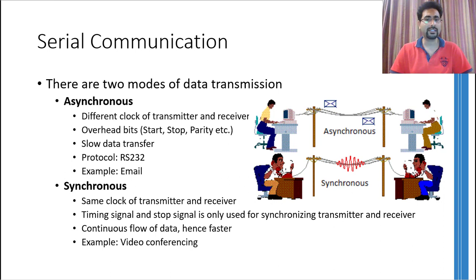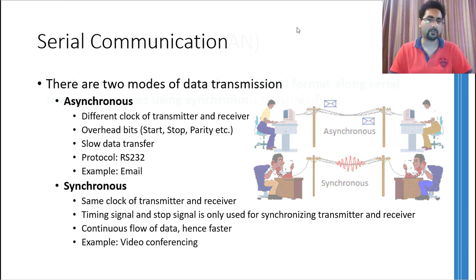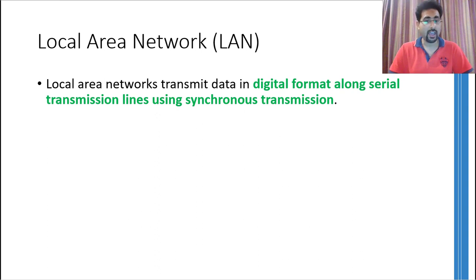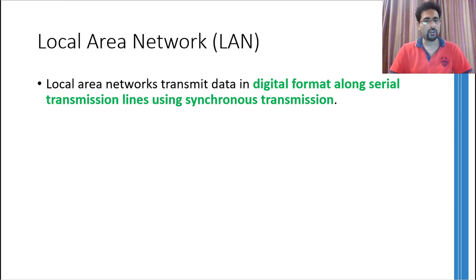An example of synchronous communication is live video conferencing, where whatever your friend says, you will listen to it as soon as your friend speaks, and the same happens in the reverse direction. Simple serial or parallel communications are fine as long as there are only two devices. But if there are more than that, you need some kind of a network — normally called a local area network. This is a network of local devices which can communicate with each other using defined protocols and rules. LAN networks normally transmit data in digital form using serial transmission lines and synchronous transmission.